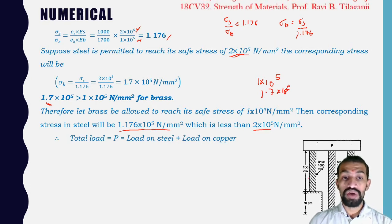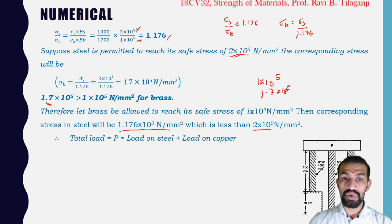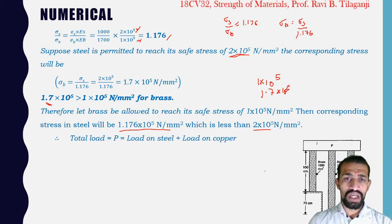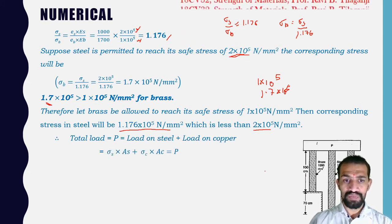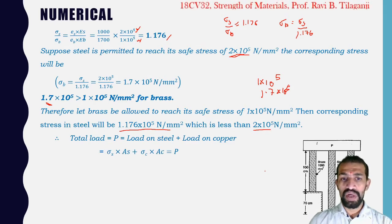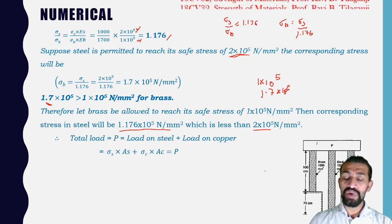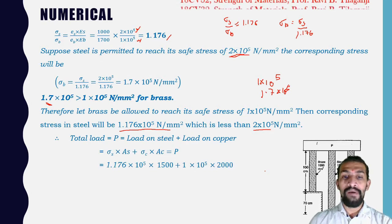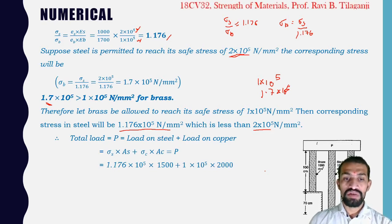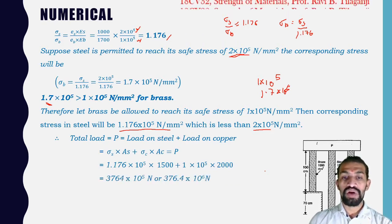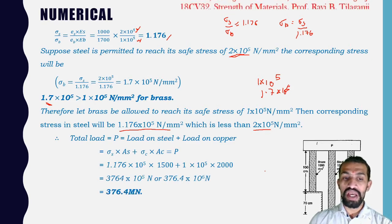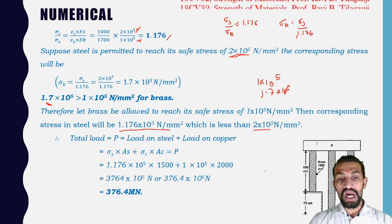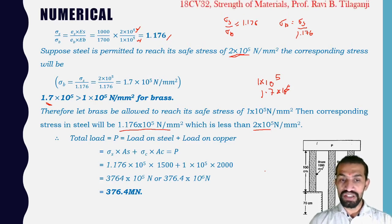Total safe load P = σS × AS + σC × AC. Substituting known values, the total load that can be carried is 376.4 kN.